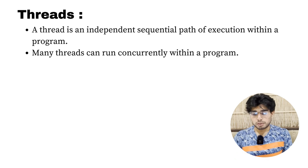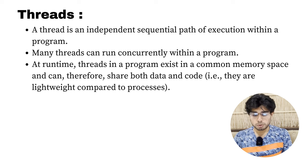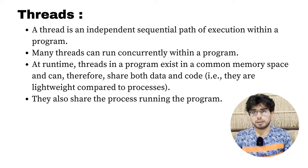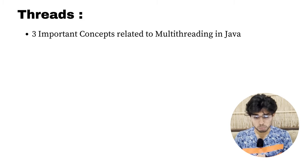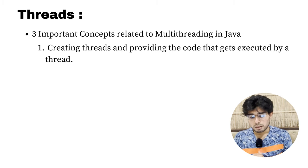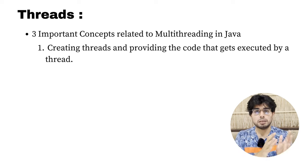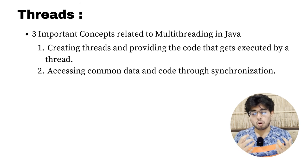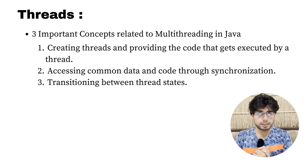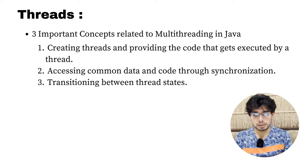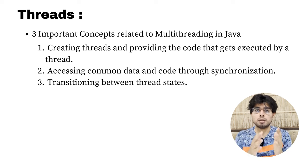Many threads can run concurrently within a program. Threads in a program exist in a common memory space, sharing both data and code. The three important concepts we'll cover in this video are: creating threads and providing the code executed by them, accessing common data and synchronization, and transitioning between thread states. Don't worry if these sound intimidating — we'll dive deep into each one.